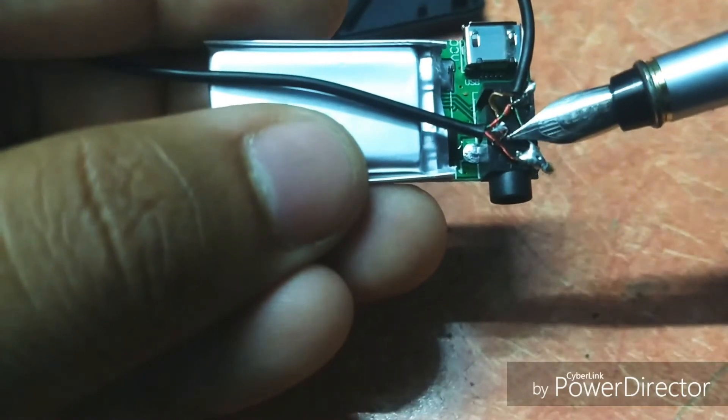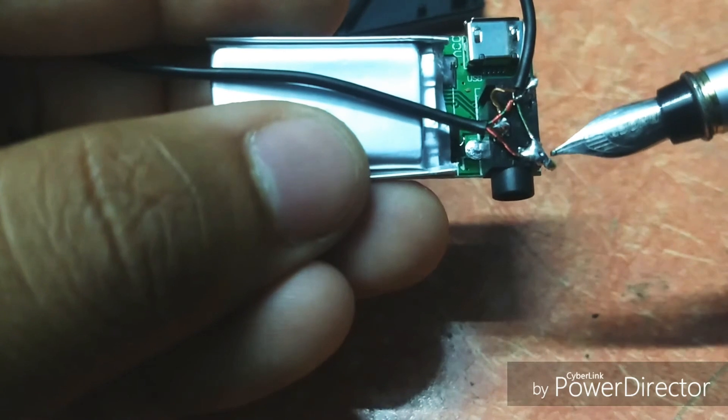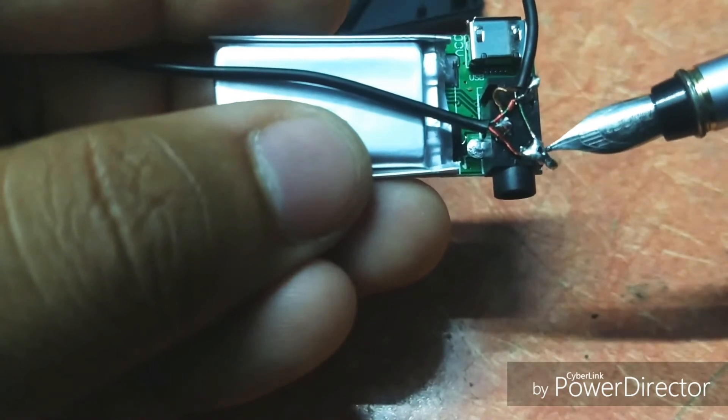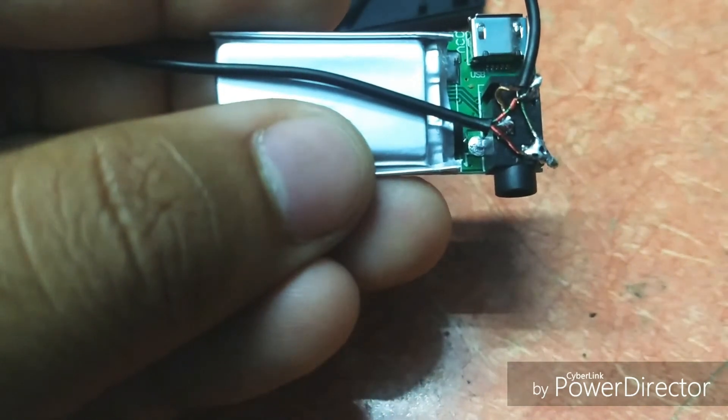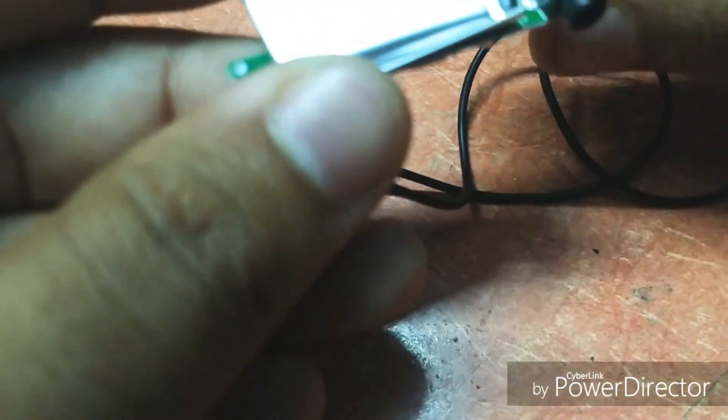The left channel and the right channel are soldered to these two points, and the common point where the two wires are connected will come to this point. That's all, you're done with the wiring and it's ready.